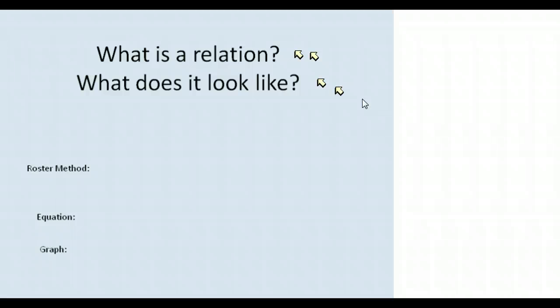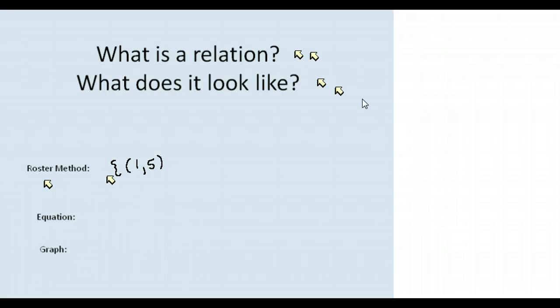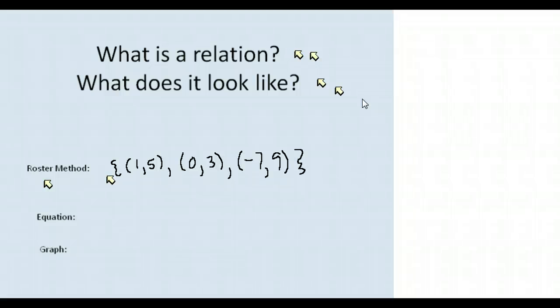What does a relation look like? It can look like any of those three things. The first one is the roster method, where they just go ahead and list the points. For example, this could be a relation: the points (1, 5), (0, 3) — these are all points X comma Y. For this first point when X is 1, Y is 5; when X is 0, Y is 3; and when X is negative 7, Y is 9. That is their relation to one another.